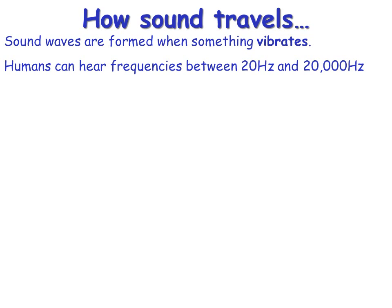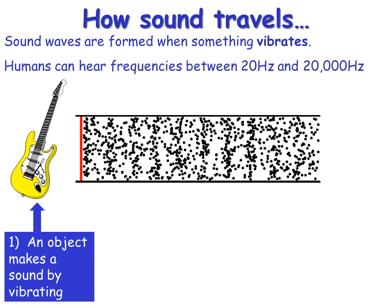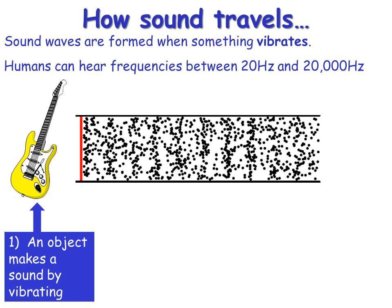Humans can hear frequencies between 20 and 20,000 Hertz. For example, an electric guitar — plucking the strings produces a sound, and this makes the air vibrate around it. Here's a model of what the air molecules look like.